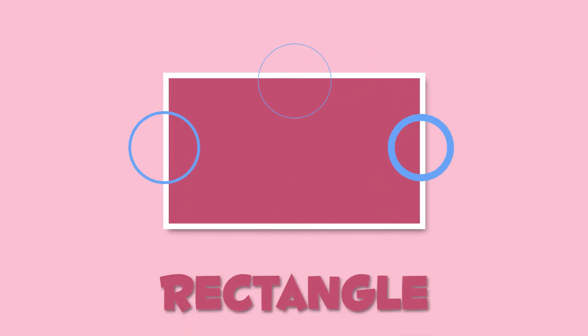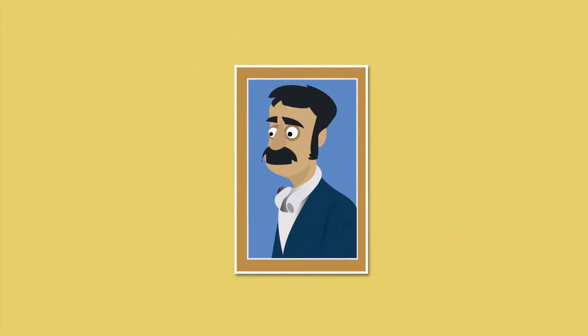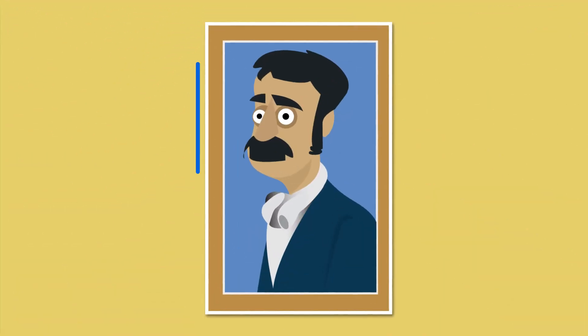This is a rectangle. It has four sides, like the square, but they're not identical — only its opposite sides are equal in length. A rectangle looks like this bill, or like this picture frame.